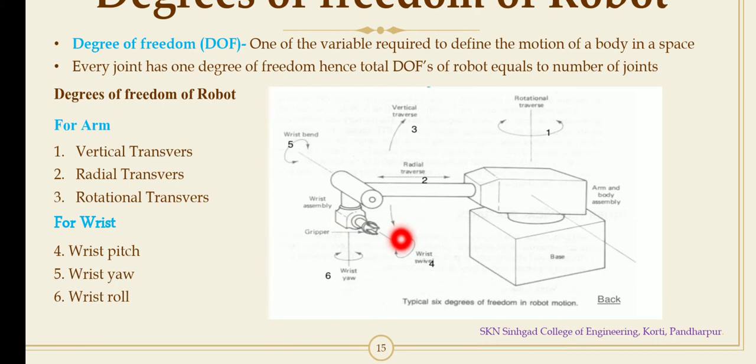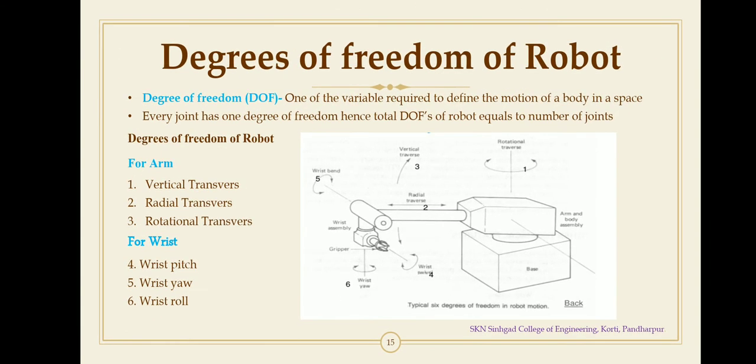So these are the different degrees of freedom of the robot. Every joint has one degree of freedom. Hence, total degrees of freedom of robot equal to number of joints.